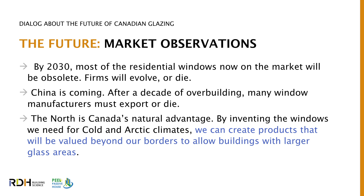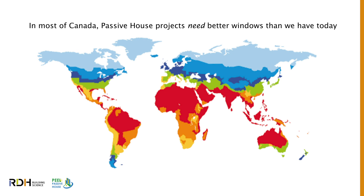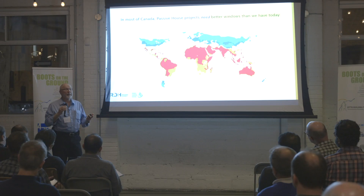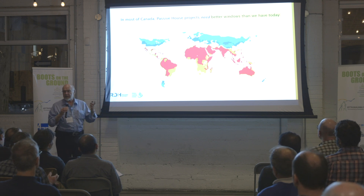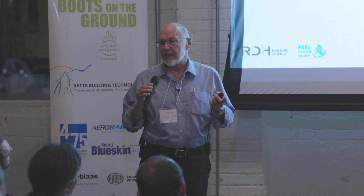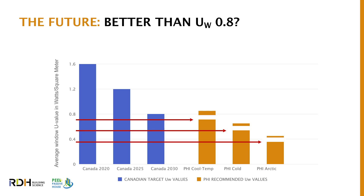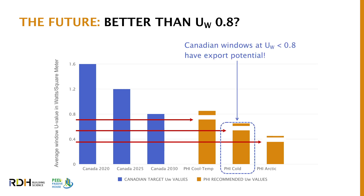But Canada has a potentially natural advantage in the north. By inventing the windows we need for cold and arctic climates, we can create products valued beyond our borders and allow buildings with larger glass areas because of lower U-values. Most of Canada today needs better windows than we have — 0.8 is not good enough for Toronto, not good enough for most of Canada, and barely good enough for Vancouver. The market for 0.8 windows is already crowded globally; the market for 0.6 and better windows is open. This could be a sweet spot for Canadian manufacturers, potentially creating an export market.